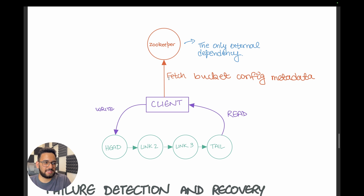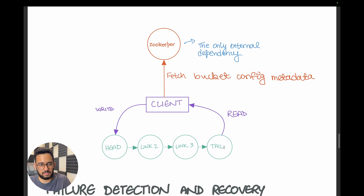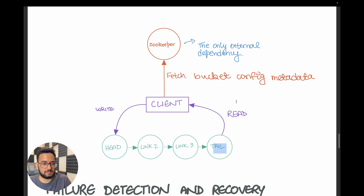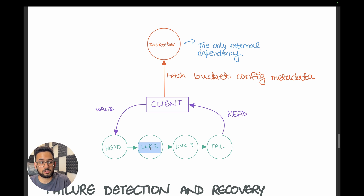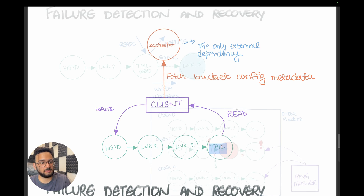Clients must know which host they want to query. This metadata — called the bucket config metadata — is stored in one external service built on top of Zookeeper. This is the only external dependency of Delta, keeping it low dependency. Clients depend on this config to determine which hosts to make requests to: for a write request they get the address of the head, and for a read request they get the address of the tail. Since Delta uses apportioned queries, reads can also be served by other nodes in the system.